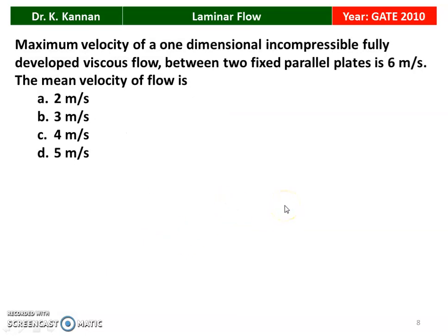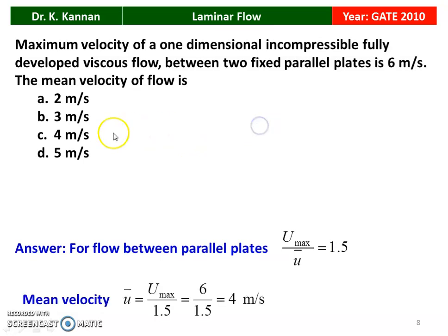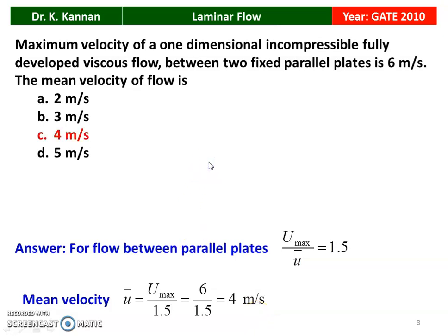Next question from GATE 2010: the maximum velocity of one-dimensional incompressible fully developed viscous flow between two fixed parallel plates is 6 m/s. The mean velocity is — options: 2, 3, 4, or 5 m/s. For flow between parallel plates, u_max / ū = 1.5. So ū = 6 / 1.5 = 4 m/s. The answer is option C, 4 meters per second.